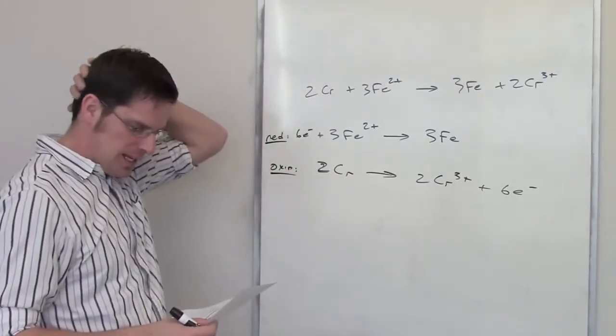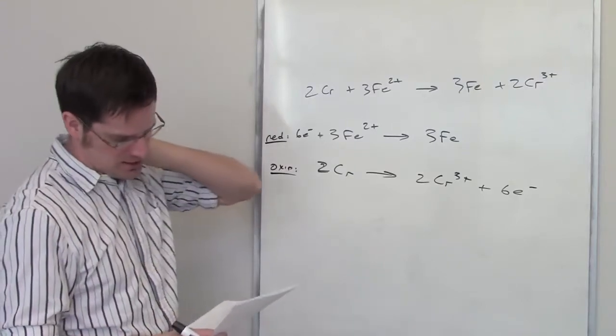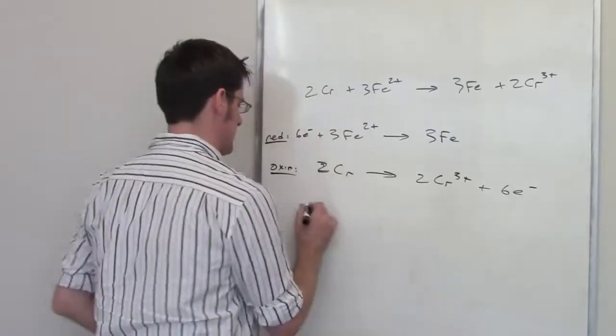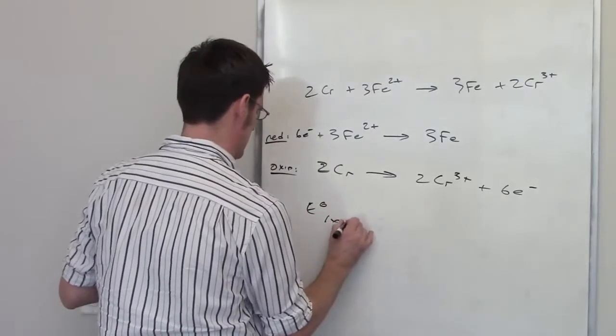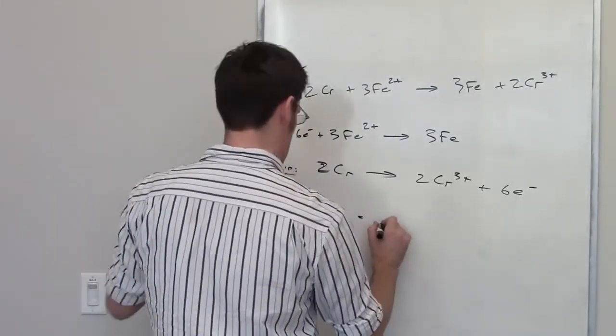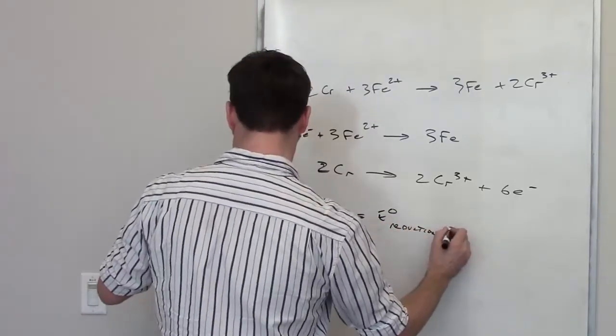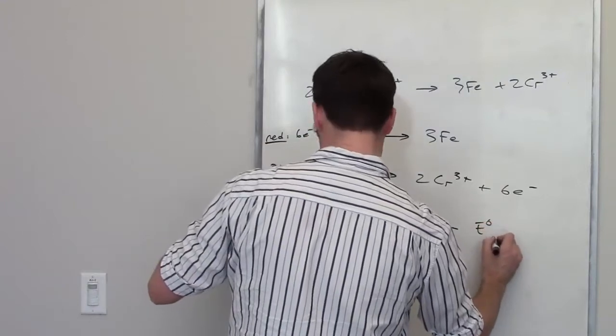So that's the overall process that I'm looking at. Now, in order to determine the standard cell potential for this, all I need to do is remember that the standard cell potential for this is going to be equal to the cell potential of reduction minus the cell potential of oxidation.